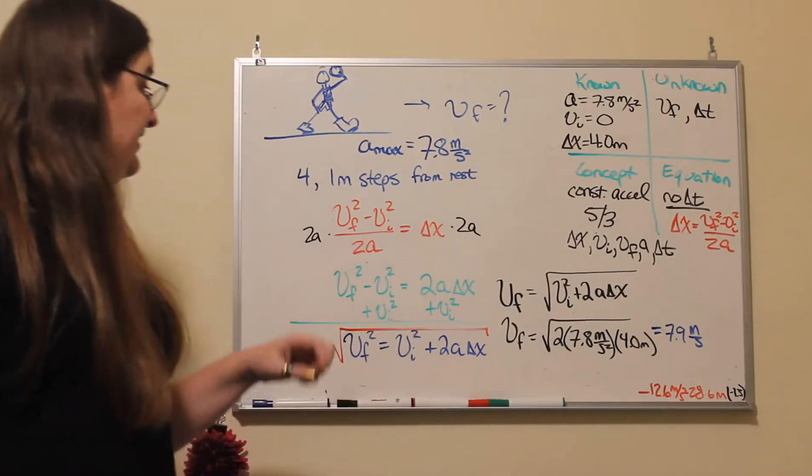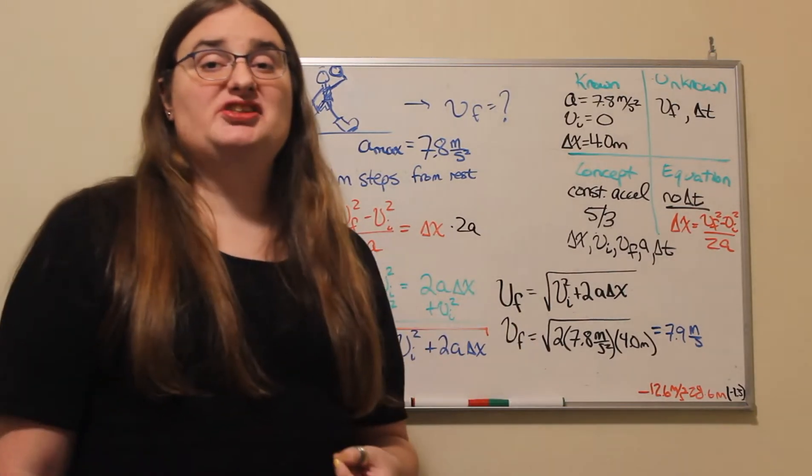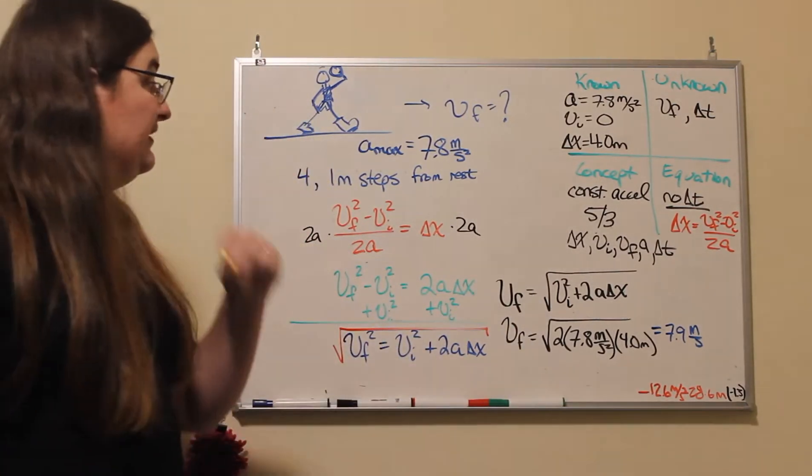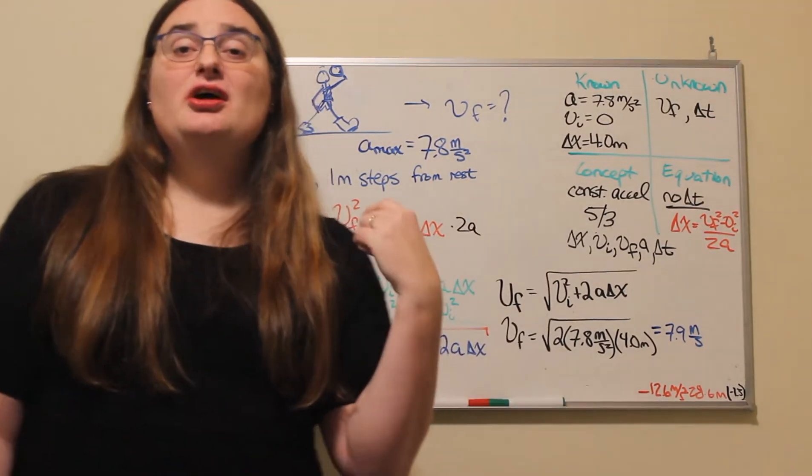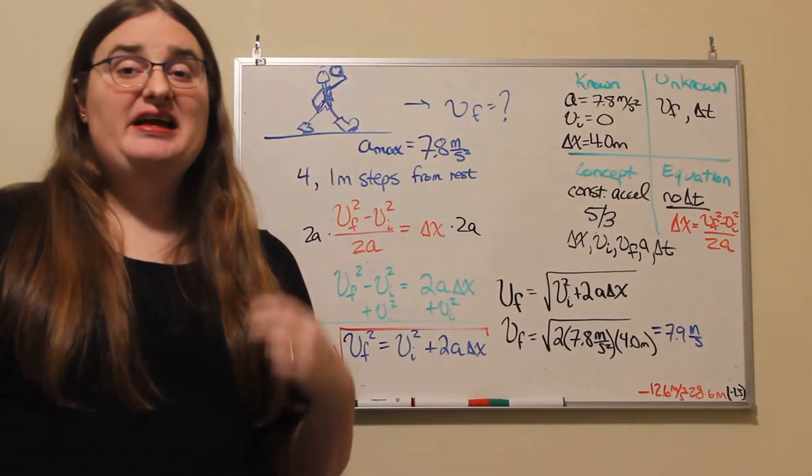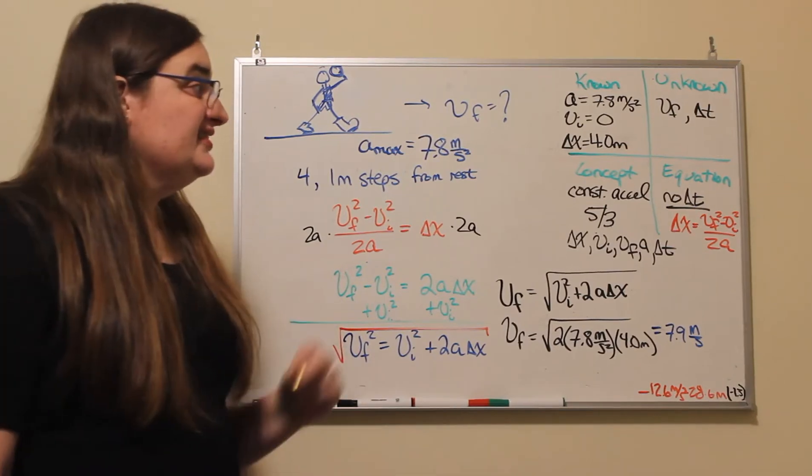So let's say that an athlete has an average step of 1.0 meters and they can take four steps from rest. How fast will they be able to be traveling after four steps of constant acceleration?